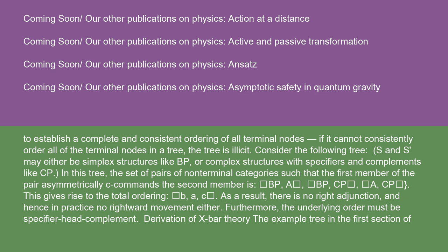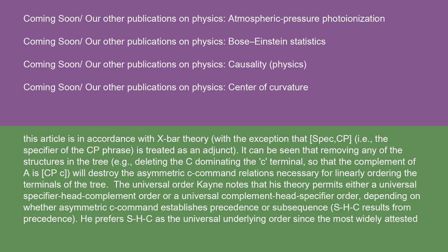Derivation of X-bar Theory: The example tree in the first section of this article is in accordance with X-bar theory, with the exception that spec CP, i.e. the specifier of the CP phrase, is treated as an adjunct. It can be seen that removing any of the structures in the tree — e.g., deleting the C dominating the C terminal so that the complement of A is CPC — will destroy the asymmetric C-command relations necessary for linearly ordering the terminals of the tree.